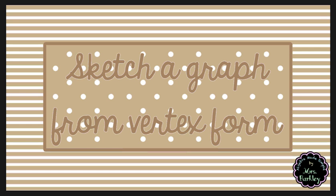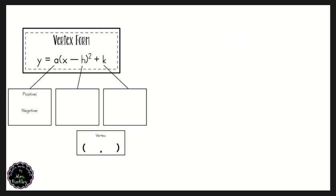In this lesson we are going to learn how to sketch a graph from vertex form. Given vertex form as y equals a times the quantity x minus h, squared, plus k, we are going to identify some key components of vertex form based on a graph and the equation.